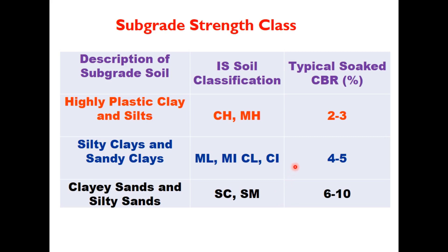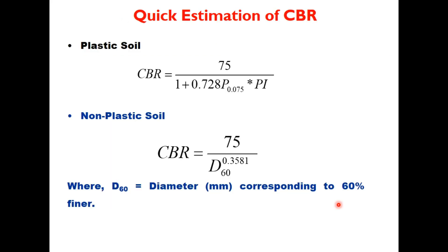Subgrade strength can also be estimated from soil properties. Highly plastic clay and silt classified as CH or MH typically has CBR of 2–3%. Clayey sand and silty sand (SC and SM per IS soil classification) may have CBR of 6–10%, but these are presumptive estimates. CBR can also be estimated using equations — for plastic soils using P₀.₀₇₅ and PI, and for non-plastic soils using 75/D₆₀^0.3581, where D₆₀ is the diameter in mm corresponding to 60% finer. Ideally, CBR should be estimated from soil samples collected from the field.